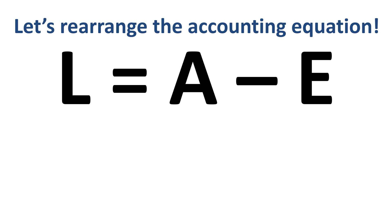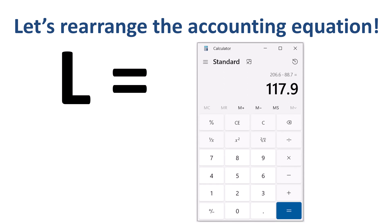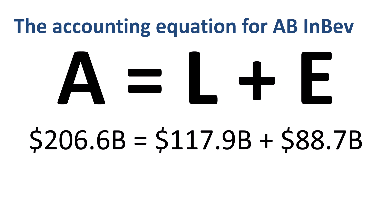Liabilities equal assets minus equity. Out comes the calculator: $206.6 billion minus $88.7 billion equals $117.9 billion. That's the accounting equation for our AB InBev example completed in two ways.